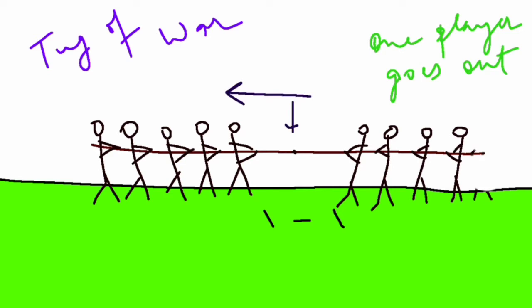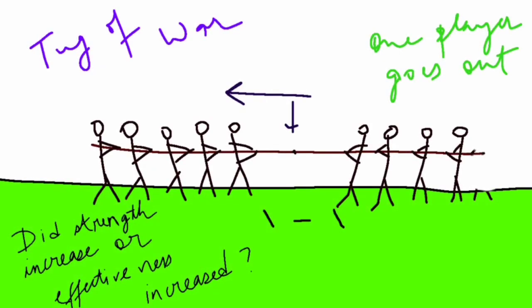So the question is whether the strength of those five persons has increased or the strength is same because now on the right hand side there are four players the same strength effectiveness has increased.